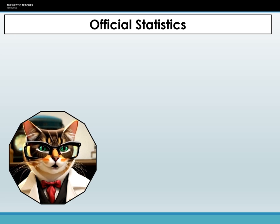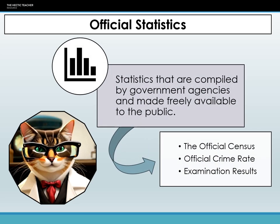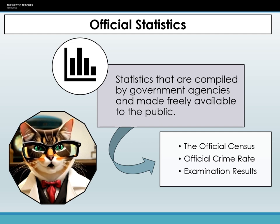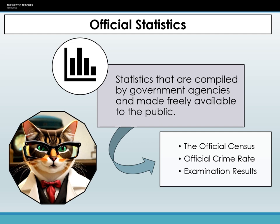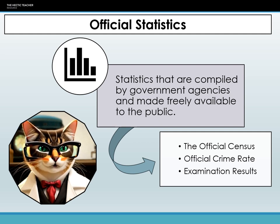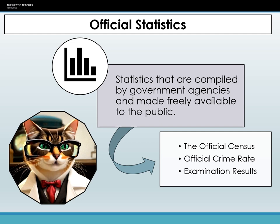The first type of secondary data is official statistics. Official statistics refer to datasets meticulously compiled and made public by government entities or organizations. These are primarily derived from large-scale methodological investigations such as surveys, administrative archives, censuses, and other sanctioned procedures. Such statistics are conveniently accessible, for instance, via platforms like the Office of National Statistics website.